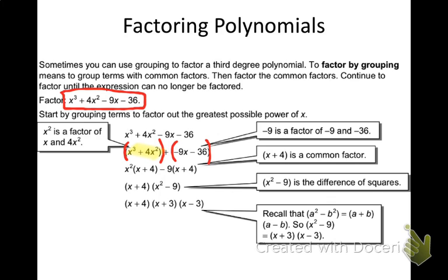For instance, the first group: x cubed plus 4x squared. Think about what they both have in common that you can pull out. The first term has three x's (x cubed), the second has two x's (x squared). So they have two x's in common, which means x squared comes out. It's undistributing — pulling it out, going backwards from distributing. Now the right side: negative 9x minus 36. There are no x's in common, just numbers. They're both divisible by negative 9, so I pull the negative 9 out.